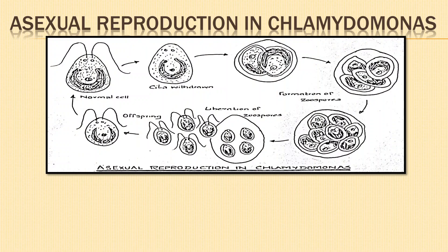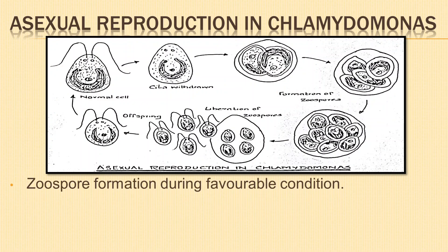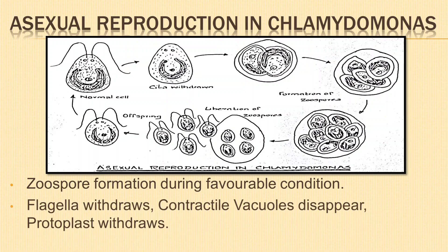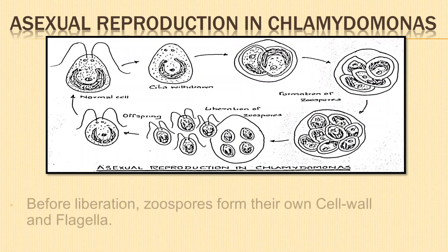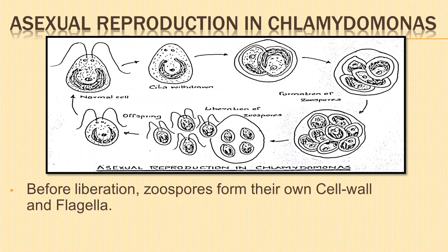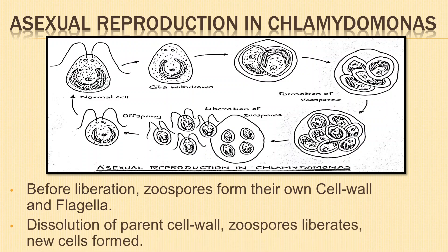Asexual reproduction takes place during favorable conditions by the formation of zoospores. First, the cell withdraws its flagella and becomes non-motile. The contractile vacuoles disappear and the protoplast slightly withdraws from the cell wall. The contents of the cell undergo repeated longitudinal division at right angles to one another, forming eight cells called zoospores. They remain surrounded by the parent cell wall. Before liberation, they form their own cell wall and flagella. The parent cell wall then dissolves and the zoospores are liberated.